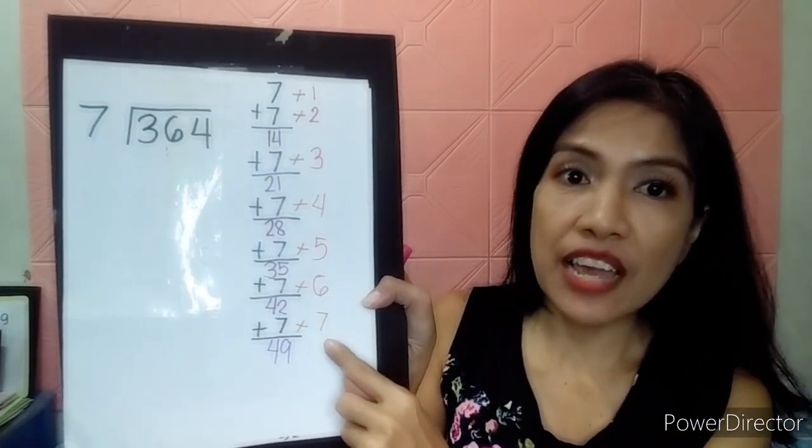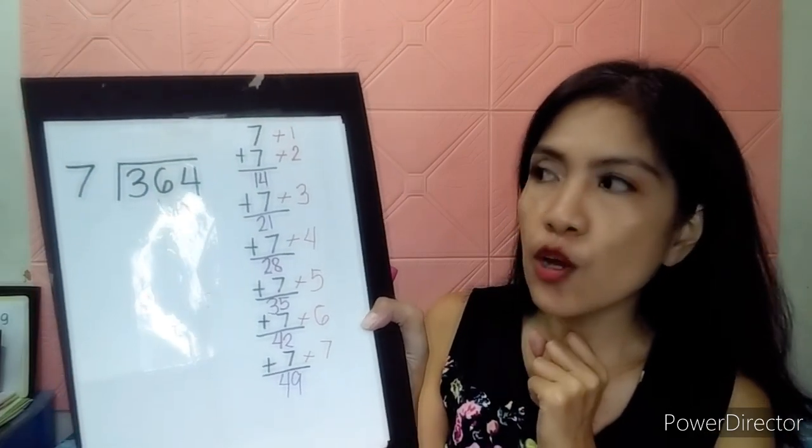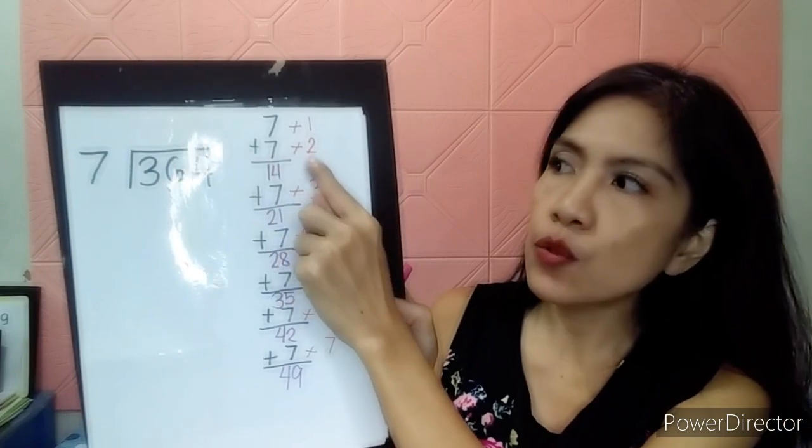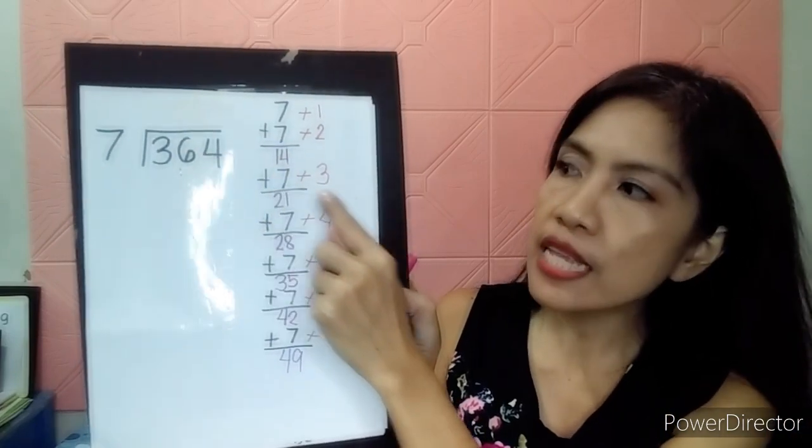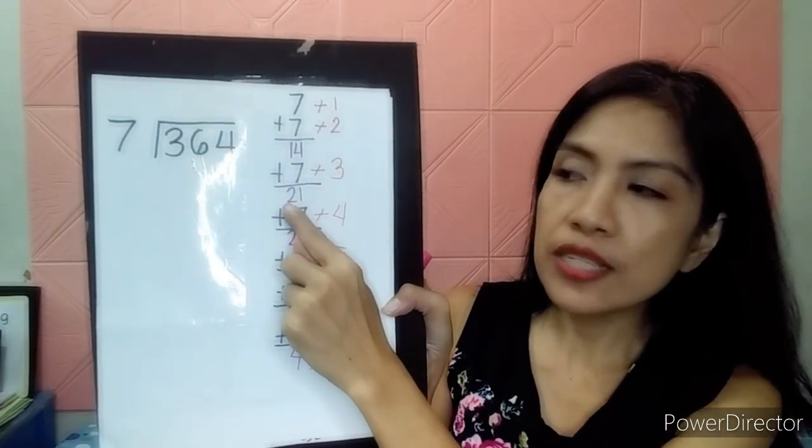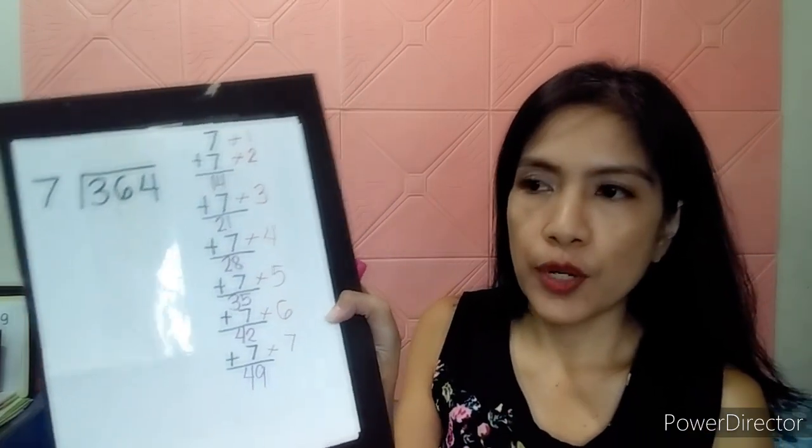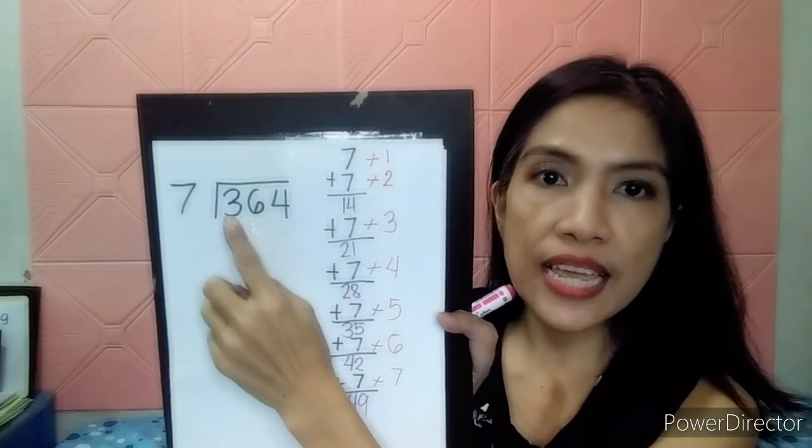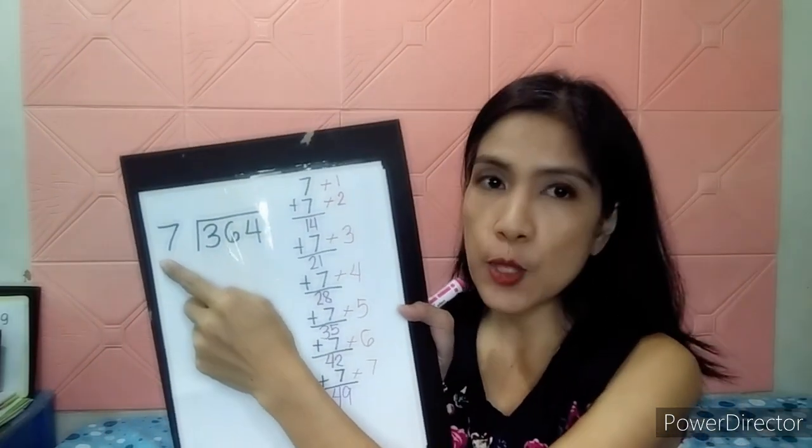and 42 plus 7 is 49. And then, after that, I asked her to number all the number 7. So, all the number 7, you should number it continuously. So, 1, 2, 3, 4, 5, 6, 7. And because I taught her that when you say 1 times 7 is 7, 2 times 7 is 14, 3 times 7 is 21, so on and so forth.